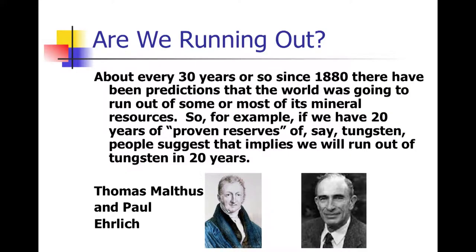Okay. So about every 30 years, there have been predictions that we're going to run out of stuff. And so, you know, the U.S. Geological Service has these estimates of reserves, and they say, well, you know, at current levels of production, we only have 20 years left of something. Tungsten is my example. And so, you know, it makes you think, well, gee, in 20 years, we'll have no tungsten or anything else. And then we'll all, society will collapse. And, you know, I think this is Thomas Malthus from about 1800.